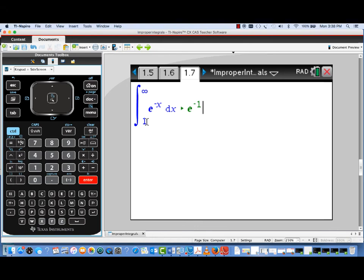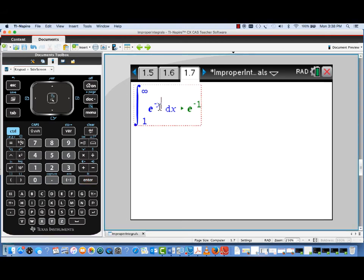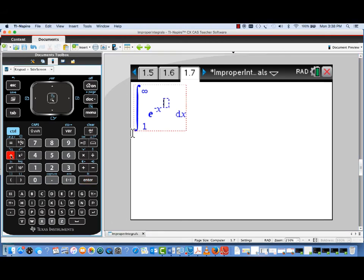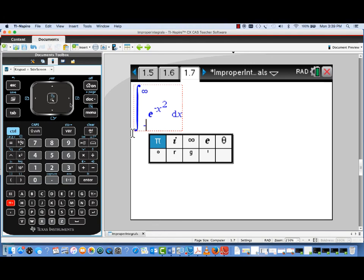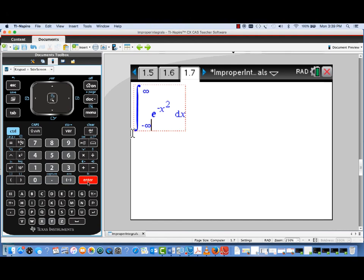Now, I'm going to edit this integral to look at a very interesting integral. I'm going to edit the power on e from minus x to minus x squared. And I'm going to replace the lower limit of integration with another infinite limit, this one minus infinity. So we're looking at the integral from minus infinity to infinity of e to the negative x squared. And now let's take a look at this improper integral.